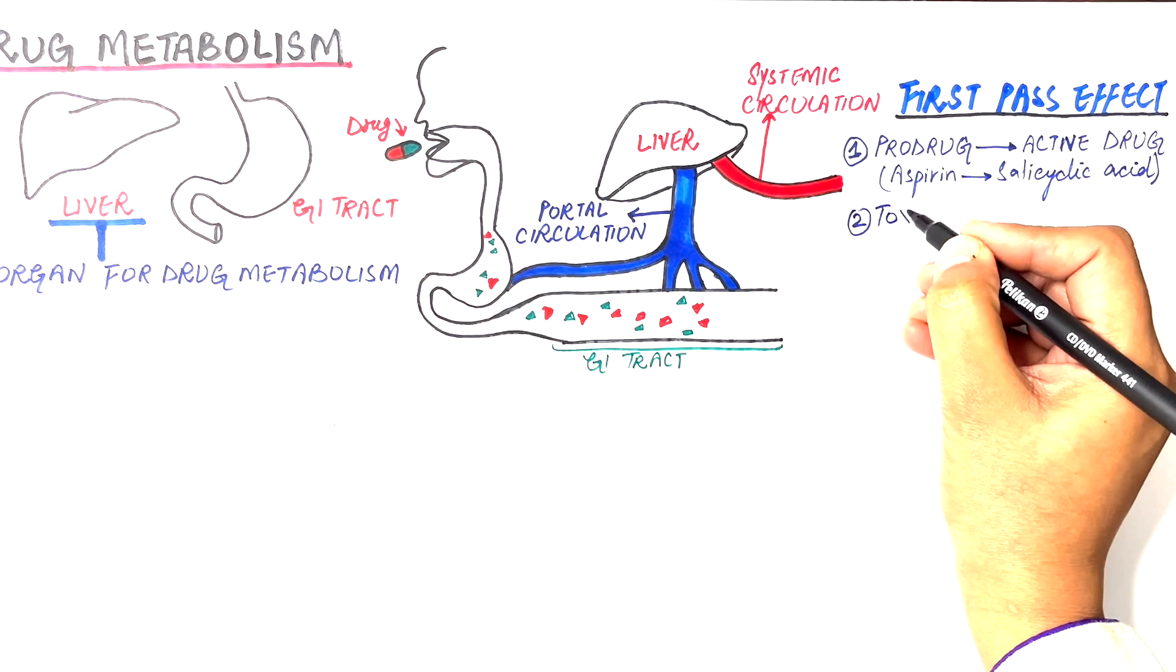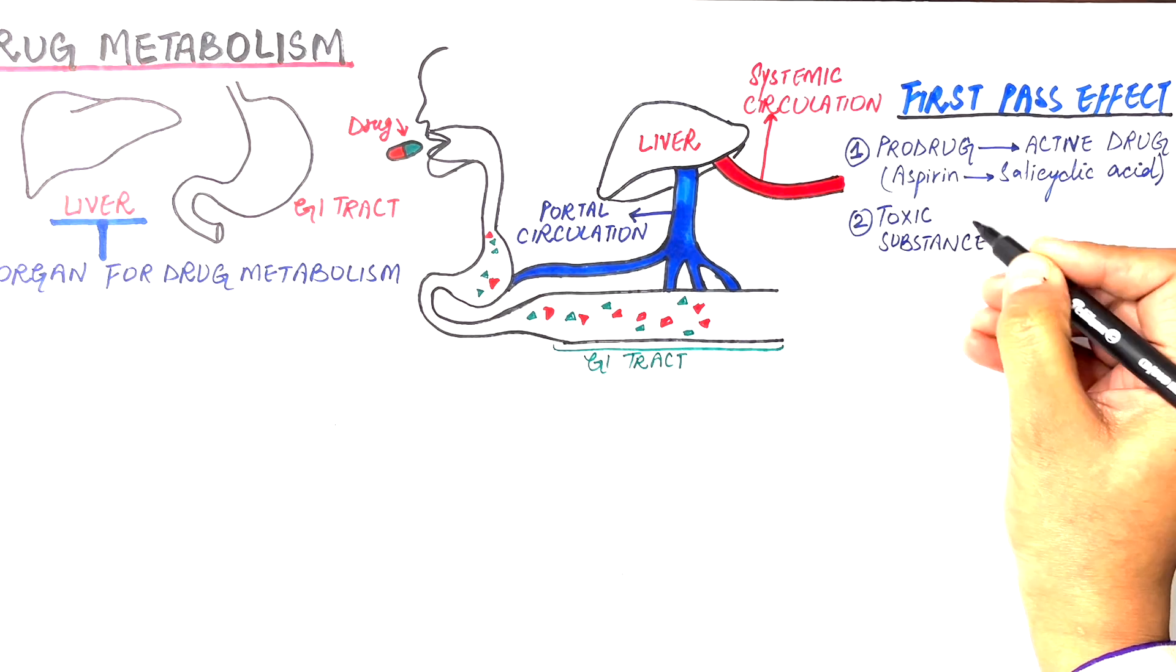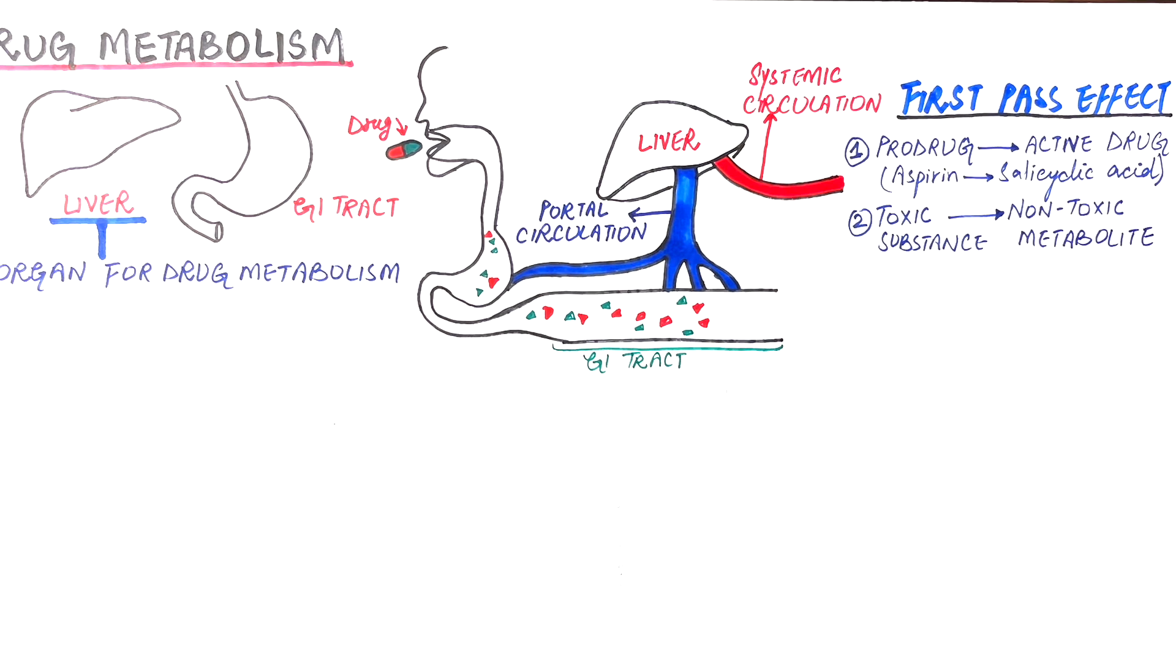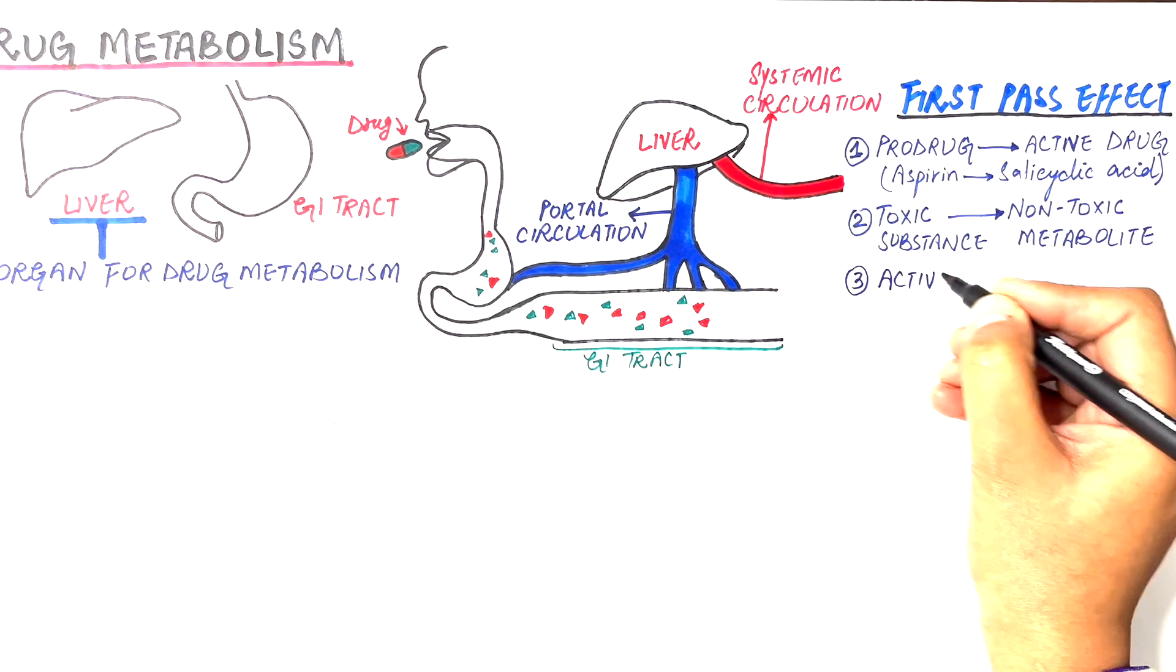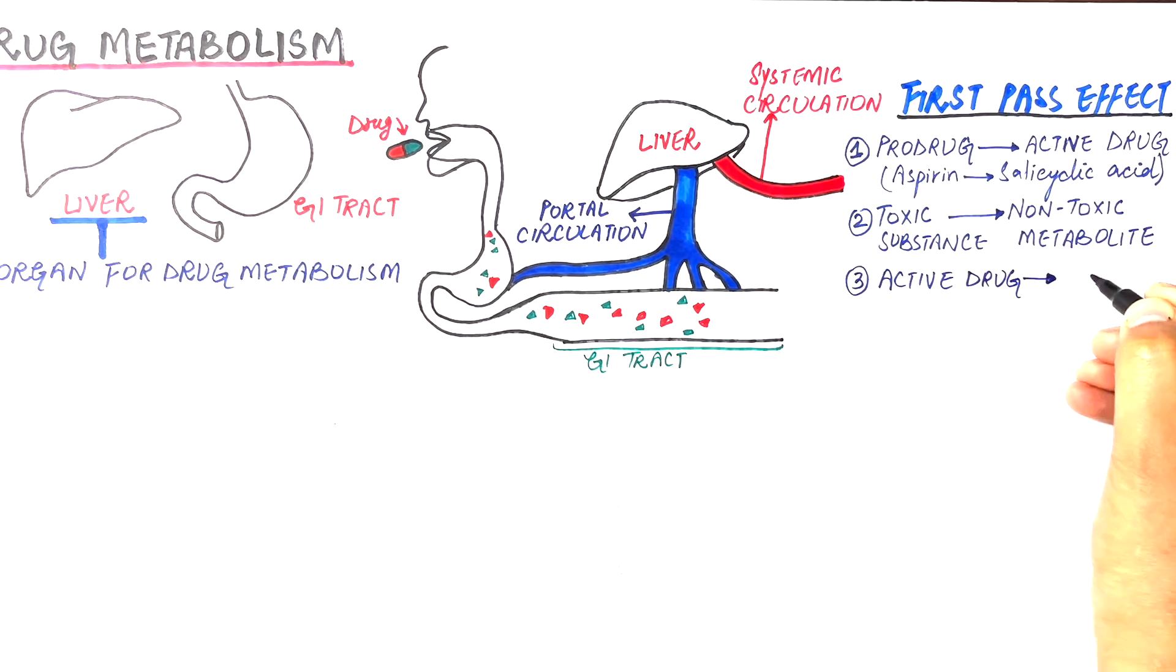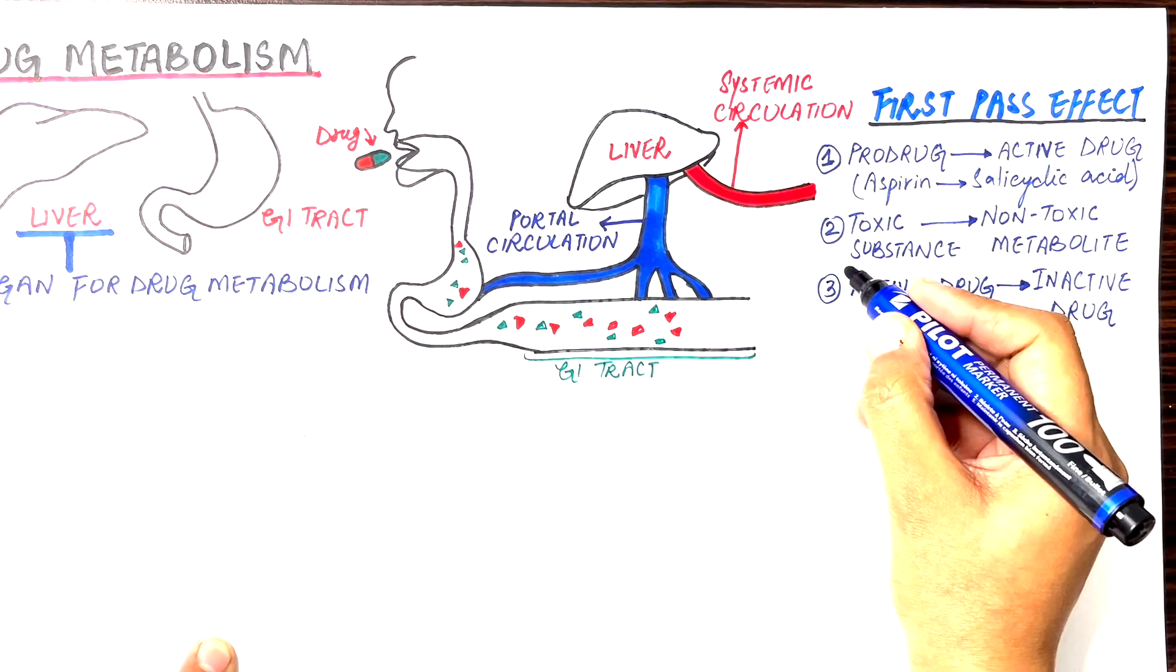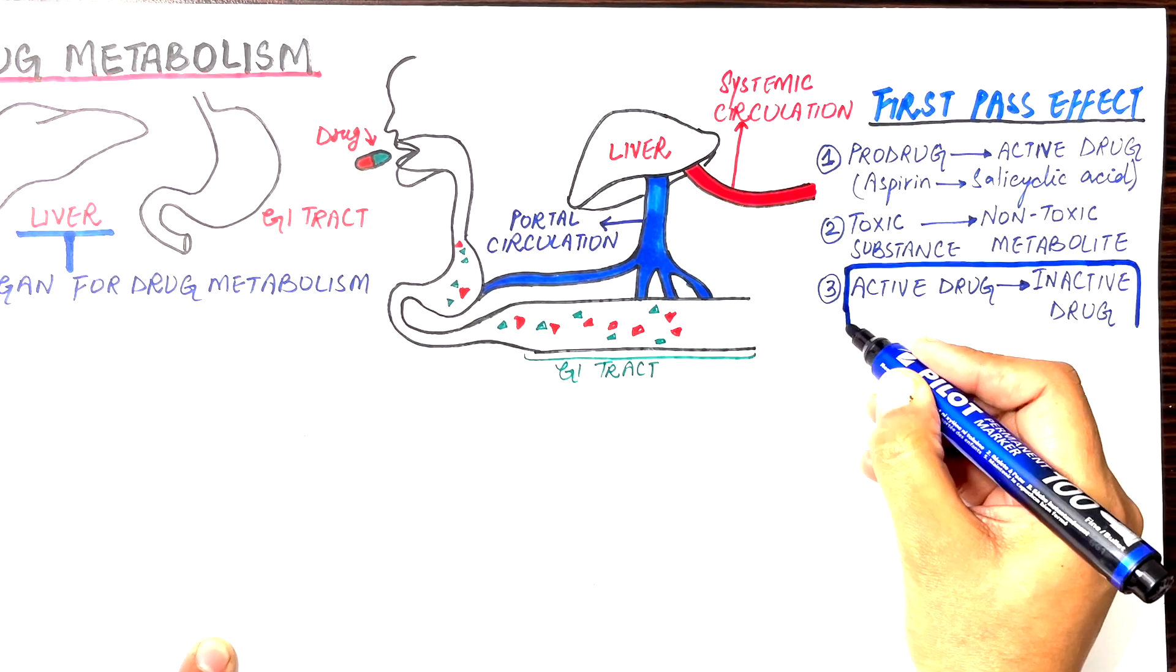It can metabolize a toxic substance into a non-toxic metabolite. And lastly, it can metabolize an active and lipophilic drug into an inactive or hydrophilic drug for its excretion. The focus of today's video is the metabolism of an active drug to an inactive drug.